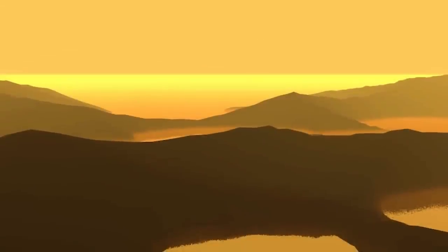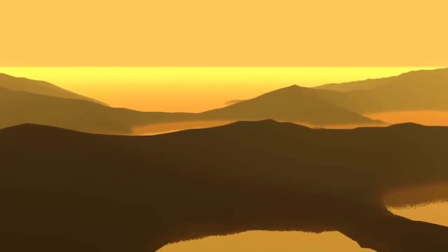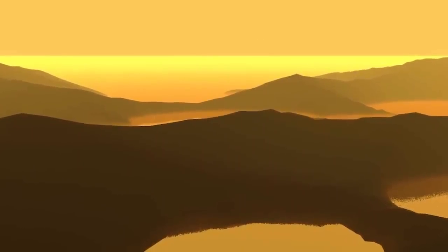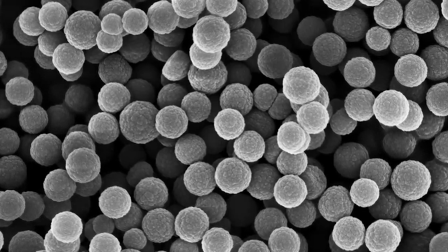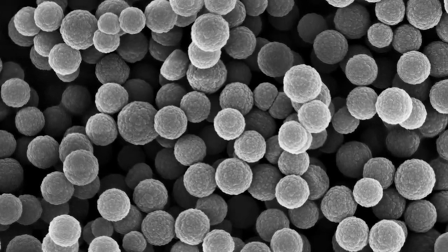Its orange color is likely produced by heteropolymer molecules called tholins. These are tar-like, organic precipitates that are thought to form in reactions resulting from the sun's photolysis of methane in Titan's nitrogen-rich atmosphere.